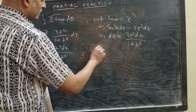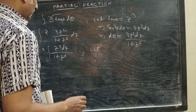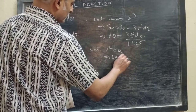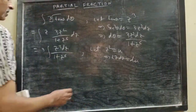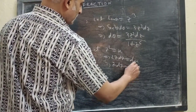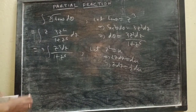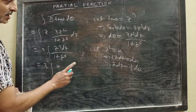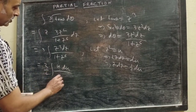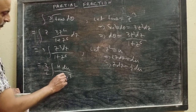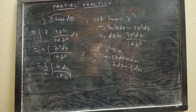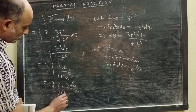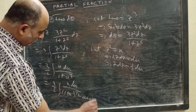Next, let z² = u. So z dz = (1/2) du. So z³ = z² · z, meaning z² is u and z dz is (1/2) du. The denominator becomes 1 + u³. This can be written as (3/2) ∫ u du / (1 + u)(1 − u + u²).